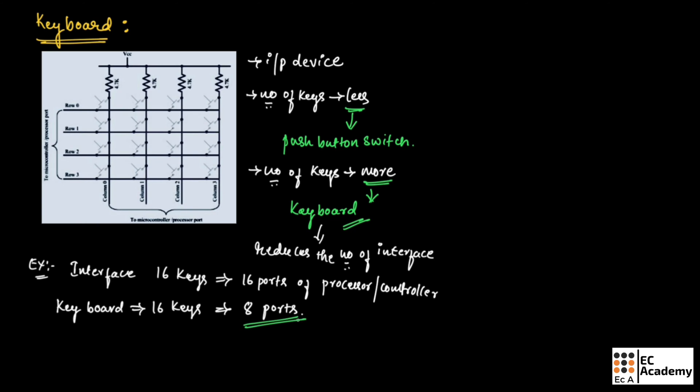Hence, it reduces the number of interface requirement. The 16 keys are arranged in the form of matrix, which consists of 4 rows and 4 columns as shown in this figure. In keyboard, 16 keys are arranged in 4 column and 4 rows matrix.